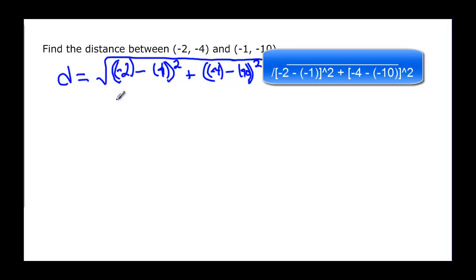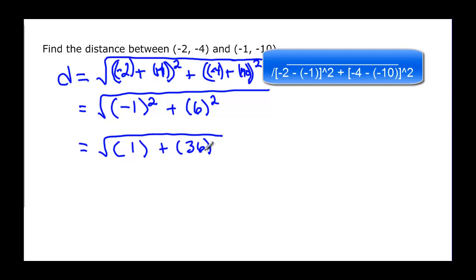So negative 2 minus a negative 1 and negative 4 minus a negative 10. This will be square root of negative 2 plus a positive 1 is going to be negative 1 squared, and negative 4 minus a negative 10 will be plus 10 or 6 squared. This gives me 1 plus 36, which will give me the square root of 37. It's not a perfect square so we can just say the square root of 37.